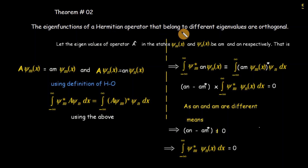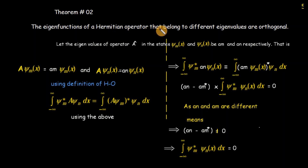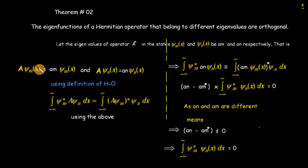Theorem 2: Eigenfunctions of a Hermitian operator that belong to different eigenvalues are orthogonal. If a Hermitian operator A has two wavefunctions with different eigenvalues, those wavefunctions are orthogonal. Let the eigenvalues of operator A in states psi_m and psi_n be a_m and a_n respectively. Using the eigenvalue equation: A psi_m = a_m psi_m and A psi_n = a_n psi_n.